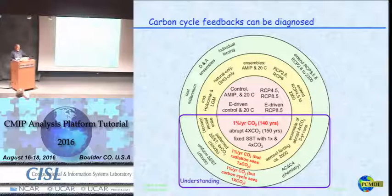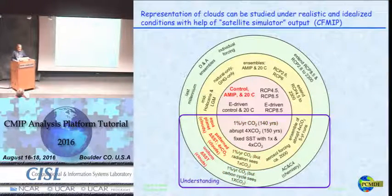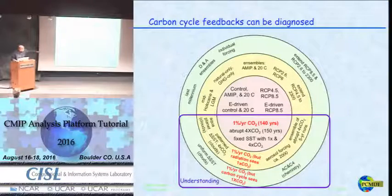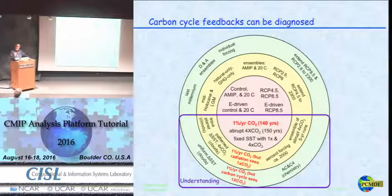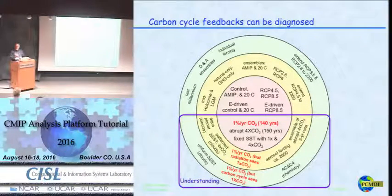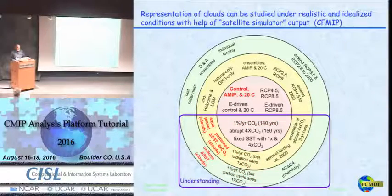It also allows you to look at carbon cycle feedbacks by doing runs in the outer tier — you can estimate the strength of carbon cycle feedbacks by doing a study where you let the radiation codes see the increase in CO2 but not the vegetation, and vice versa.